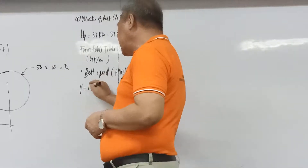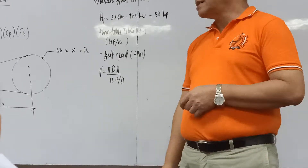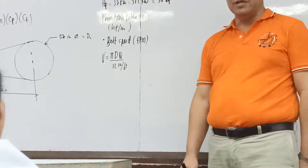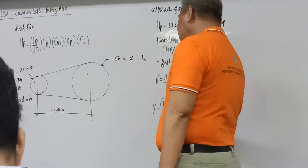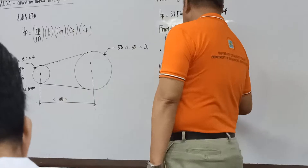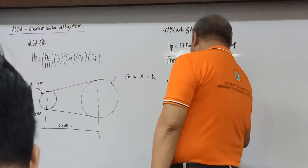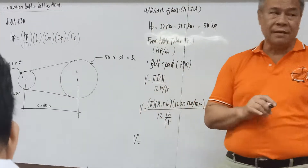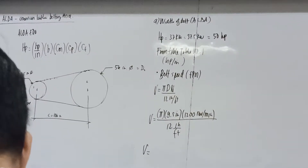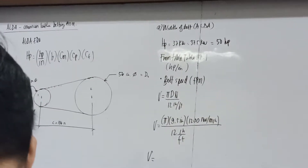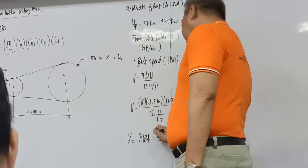After determining the belt speed, we find the horsepower per inch from Table 17.1. The table is organized by belt speed on one axis. We locate 2,984 ft/min — and since the exact value may not be listed, we can use the nearest value of 3,000 ft/min or interpolate between two values.